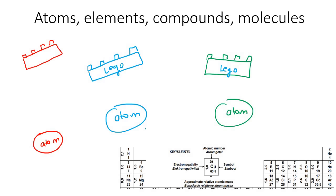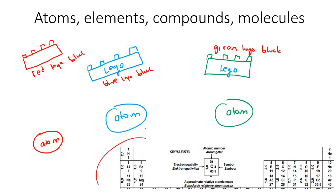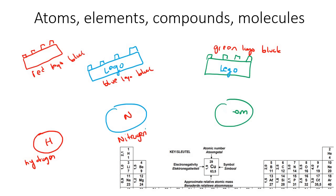Now, you get different types of atoms, just like you get different Lego blocks. Here you can say we have a red Lego block, a blue Lego block, and a green Lego block. These different types of atoms can be, for example, a hydrogen atom, a nitrogen atom, and a carbon atom.